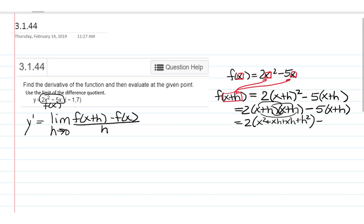Distributing the negative 5, we have minus 5x minus 5h. So, this is going to be 2x squared plus, oh actually, we can combine those like terms. So, these two are actually 2xh's, and then we are doubling that. So, that's going to be plus 4xh plus 2h squared minus 5x minus 5h.